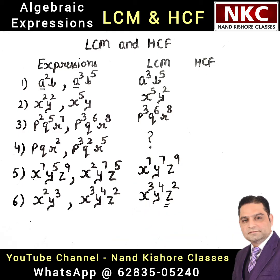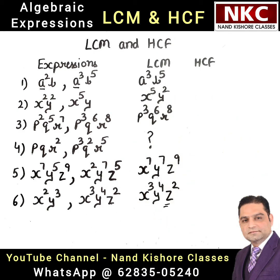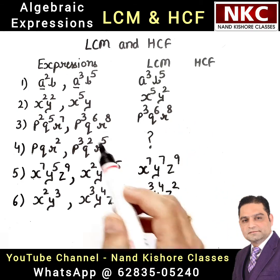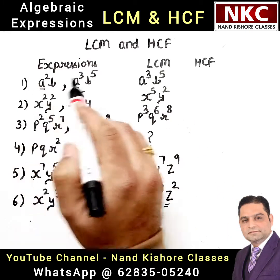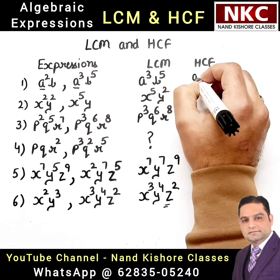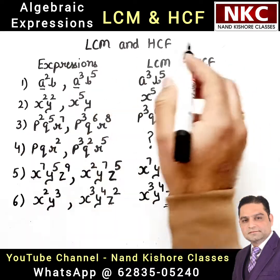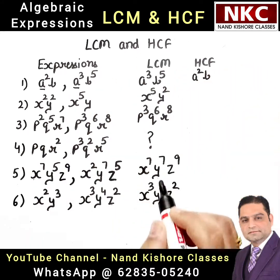Now while writing HCF: in LCM we took the higher value, but in HCF we take the smaller value. From A square and A cube, A square is smaller, so we write A square. Then only B — that is the HCF of the first question.